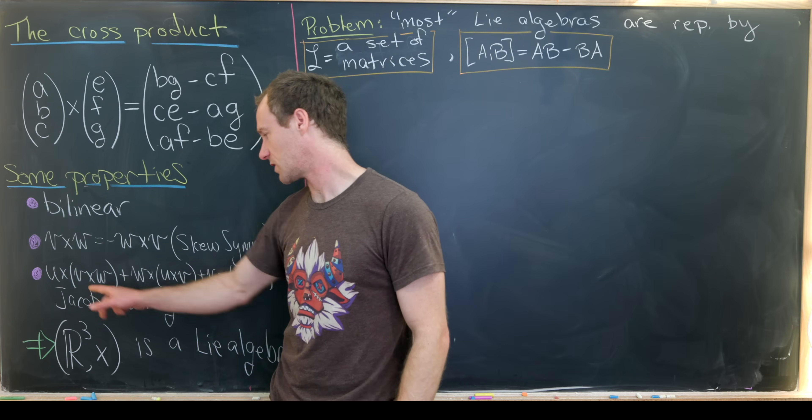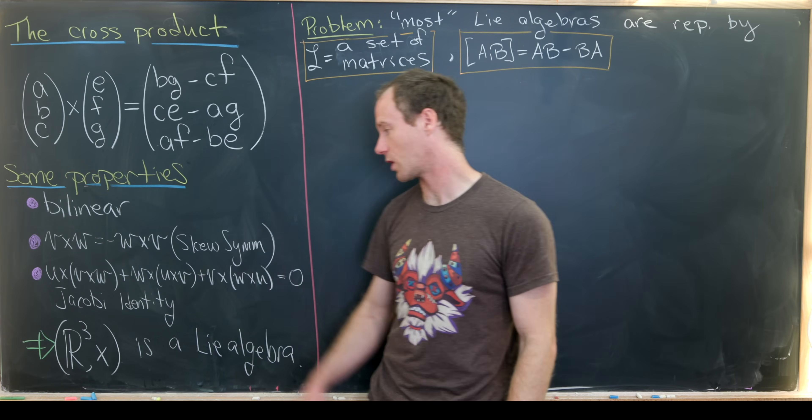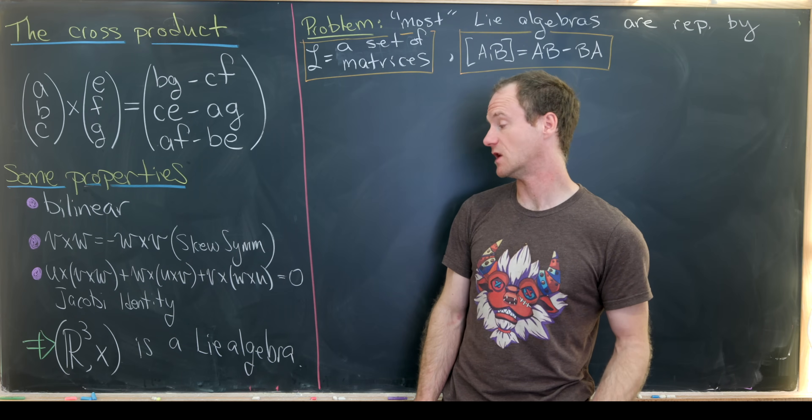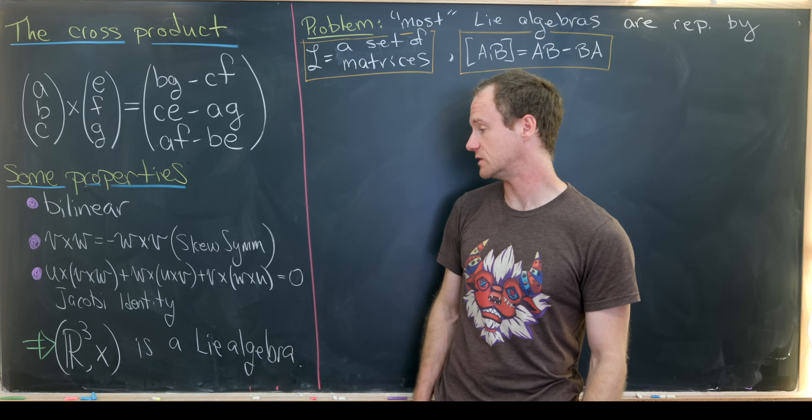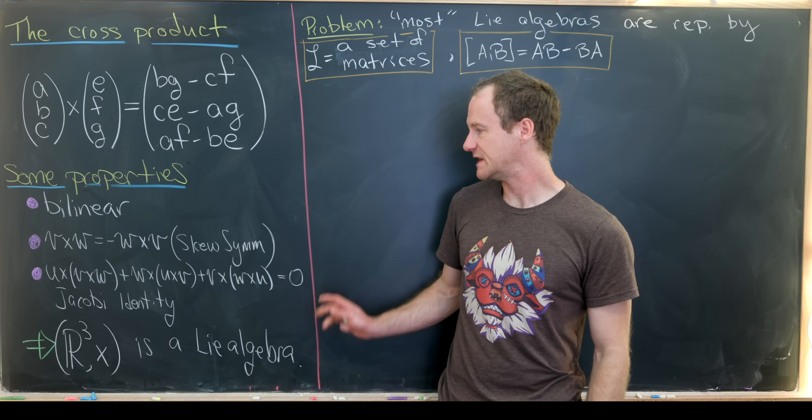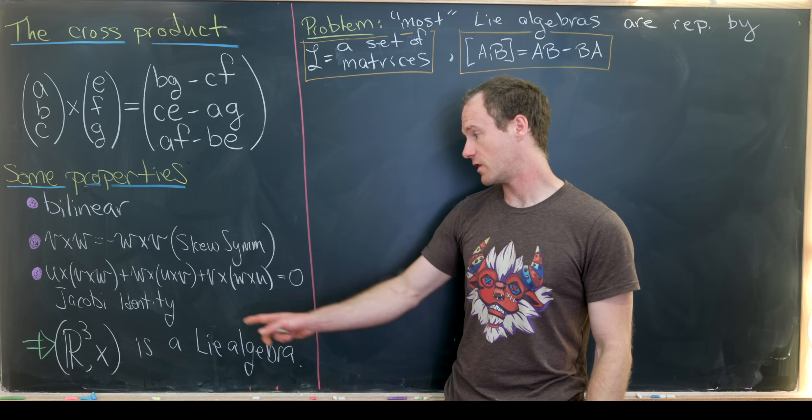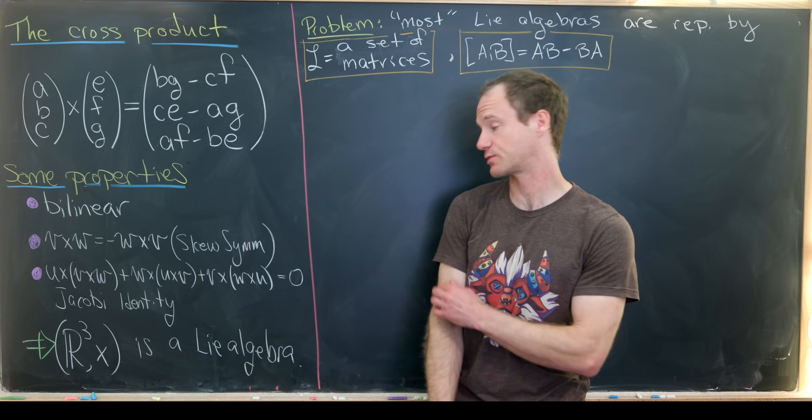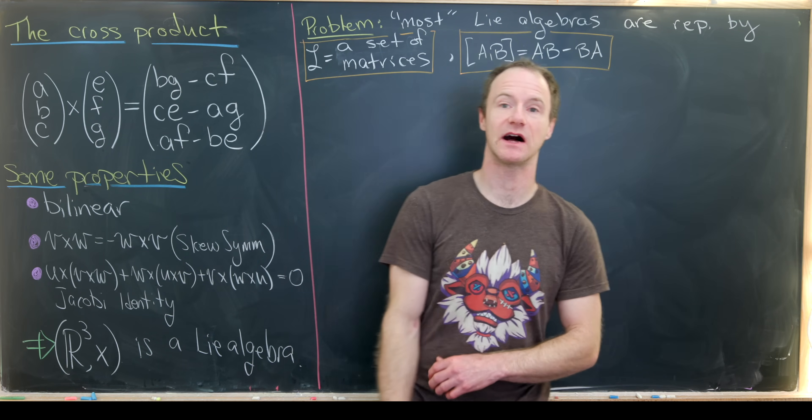We have U cross V cross W plus W cross U cross V plus V cross W cross U is equal to zero. So these three things together make the R3, three-dimensional vectors with real entries, and the cross product into something called a Lie algebra.